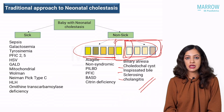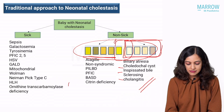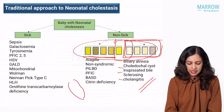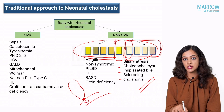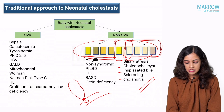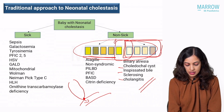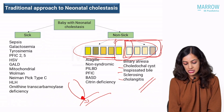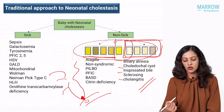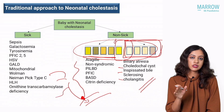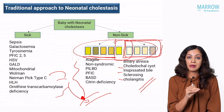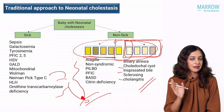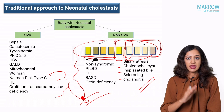Biliary atresia is the classical example. Choledochal cyst will have a dilated extra-biliary apparatus with a very narrow area where it joins the ampulla, causing obstruction to bile drainage. Similarly, inspissated bile plug syndrome will have a bile plug at the lower end of the CBD. Sclerosing cholangitis, especially if it involves the intrahepatic bile ducts, can cause pale stools.